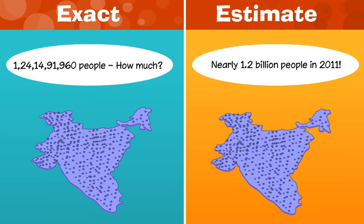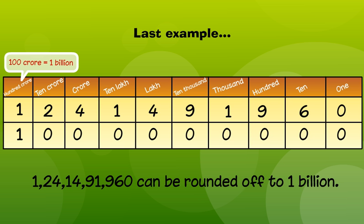But we earlier said that the population of India in 2011 was around 1.2 billion. How is that possible? Can you tell? That's because the number was rounded off to its nearest multiple of 10 crores and not a billion, as we did in the last example.